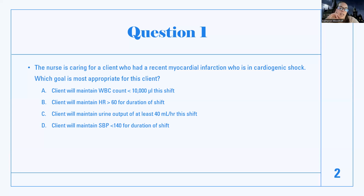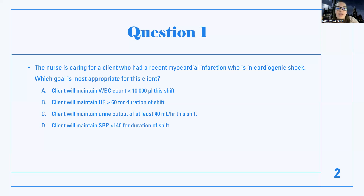Answer D: client will maintain systolic blood pressure less than 140 for duration of shift. In shock, blood pressure is already going to be low — my goal is not for it to be lower. Even though in cardiogenic shock there's a lot of fluid and blood vessels are constricted, the blood pressure is low. That's one of the hallmarks of shock. So the only real answer that applies here is C — maintaining good urine output, which is a good sign that cardiac output is improving.